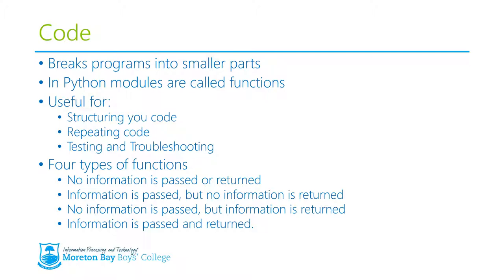There are four types of functions. The first is where no information is passed from the main program to the function and no information is returned. The second type is where information is passed from the main program but no information is returned. The third type is where no information is passed from the main program but information is returned from the function. And the fourth type is where information is both passed to the function and returned from the function to the main program.